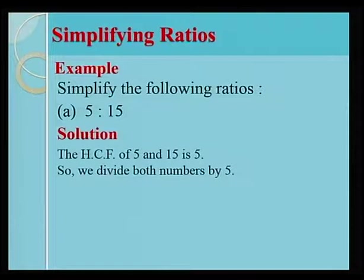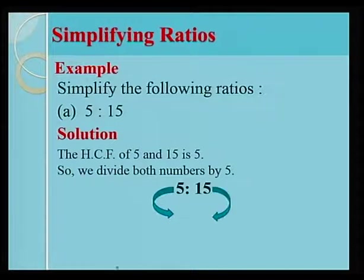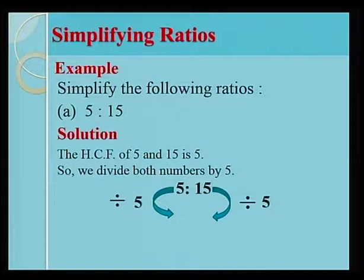The HCF of 5 and 15 is 5. So, we divide both numbers by 5. 5 divided by 5 and 15 divided by 5. We obtain 1 is to 3.